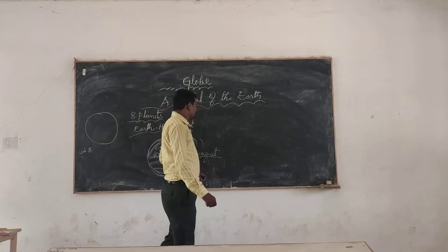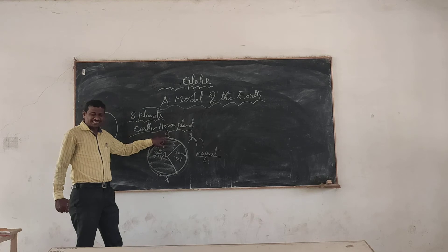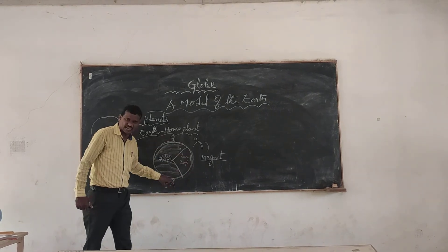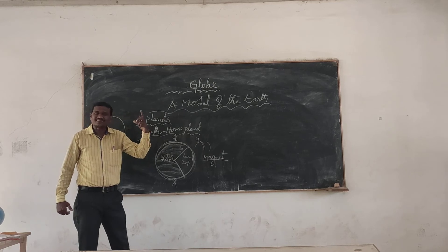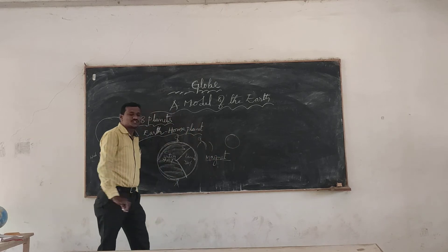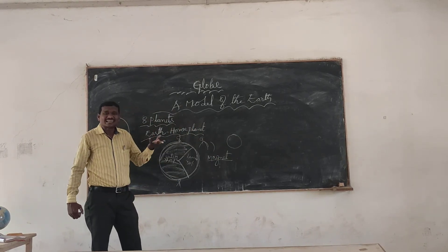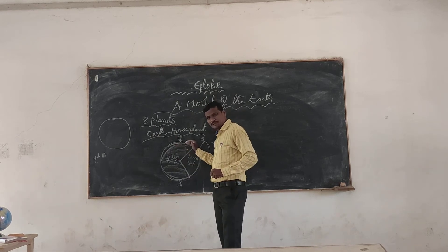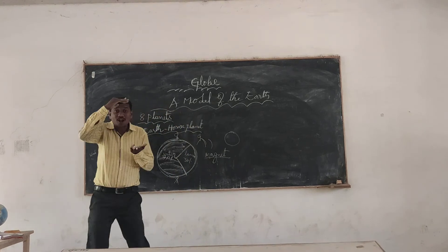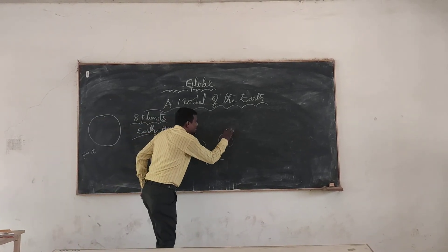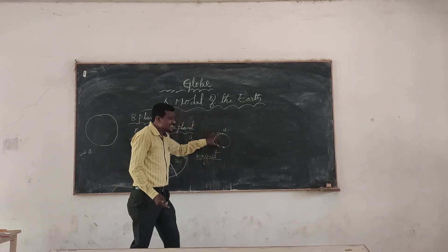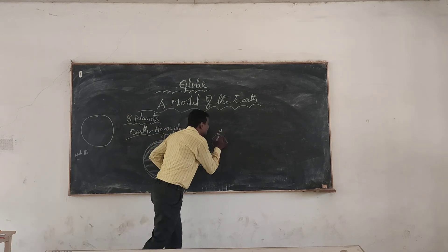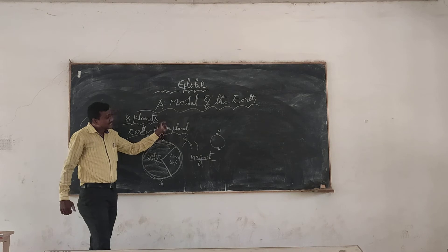Suppose you start a journey from one point, traveling in the same direction without turning back — again you will reach the same place. This is because the Earth is round or spherical in shape. But here is the key point: actually the shape of the Earth is not a clear round, spherical, or circular shape. The top, meaning the polar regions — the north pole and the south pole — the Earth is also pressed there, so the polar regions of the Earth are a little bit flat.